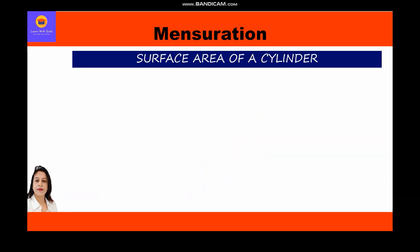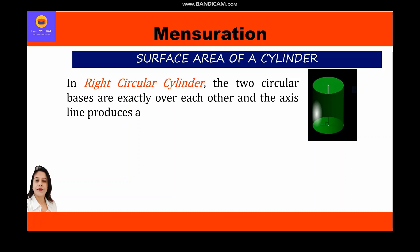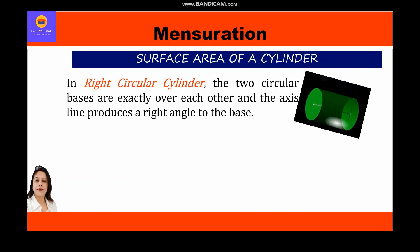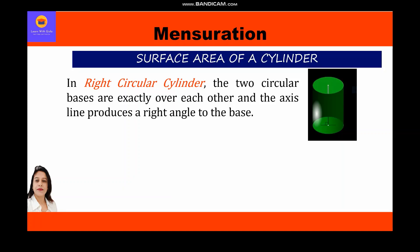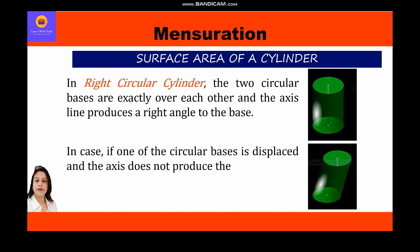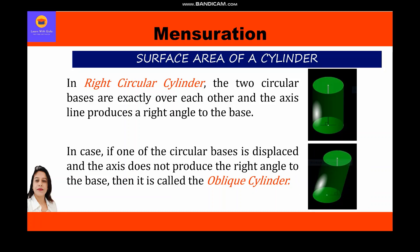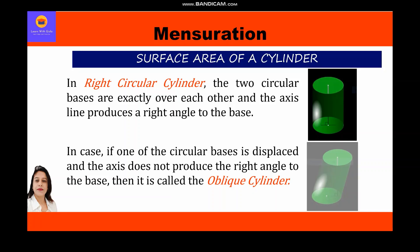What is the difference between a right circular cylinder and an oblique cylinder? In a right circular cylinder, the two circular bases are exactly over each other and the axis line produces a right angle to the base — that is, the axis is exactly perpendicular to the base, which is why it looks straight. In an oblique cylinder, one of the circular bases is displaced and the axis does not produce a right angle to the base, so the oblique cylinder appears slightly tilted.